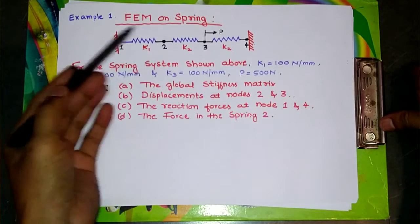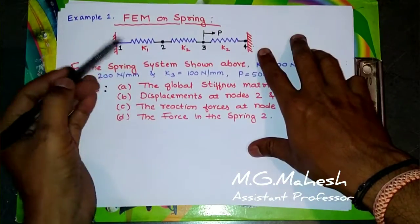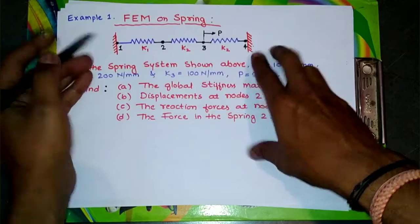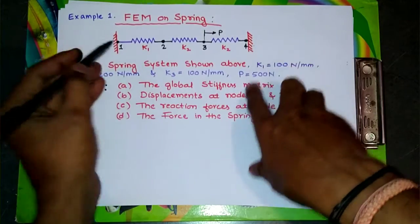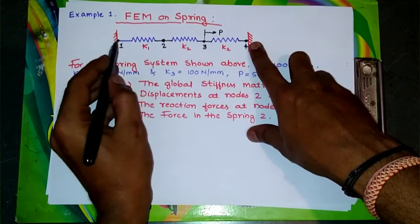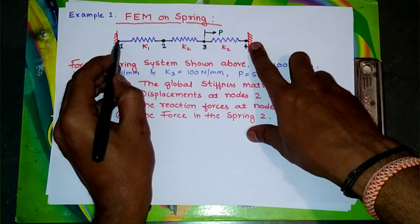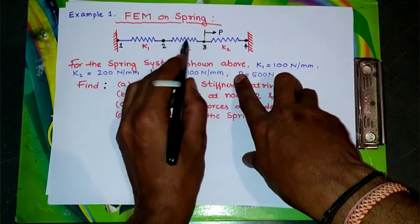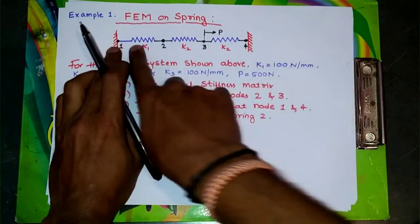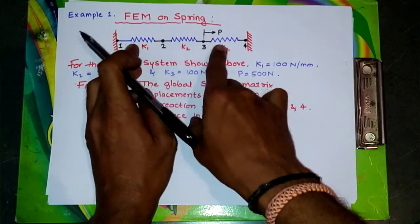Hello everyone, today in this lesson I am going to discuss the finite element method on spring elements. We can see in the figure there are three spring elements connected in series, rigidly connected at both ends. The nodes at the fixed ends are 1 and 4, and connecting from one spring to another there will be nodes 2 and 3. So we have four nodes and three elements — three springs connected.